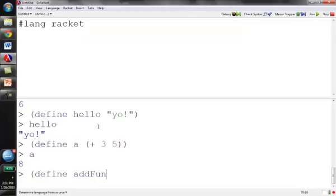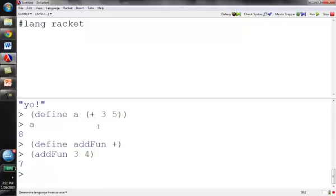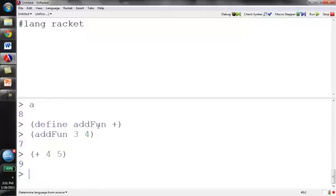I can also make things equal to functions. So I can set the add fun to be plus. And now I can call add fun on 3 and 4, and it works just like plus works. And plus will still work, but now add fun also works.